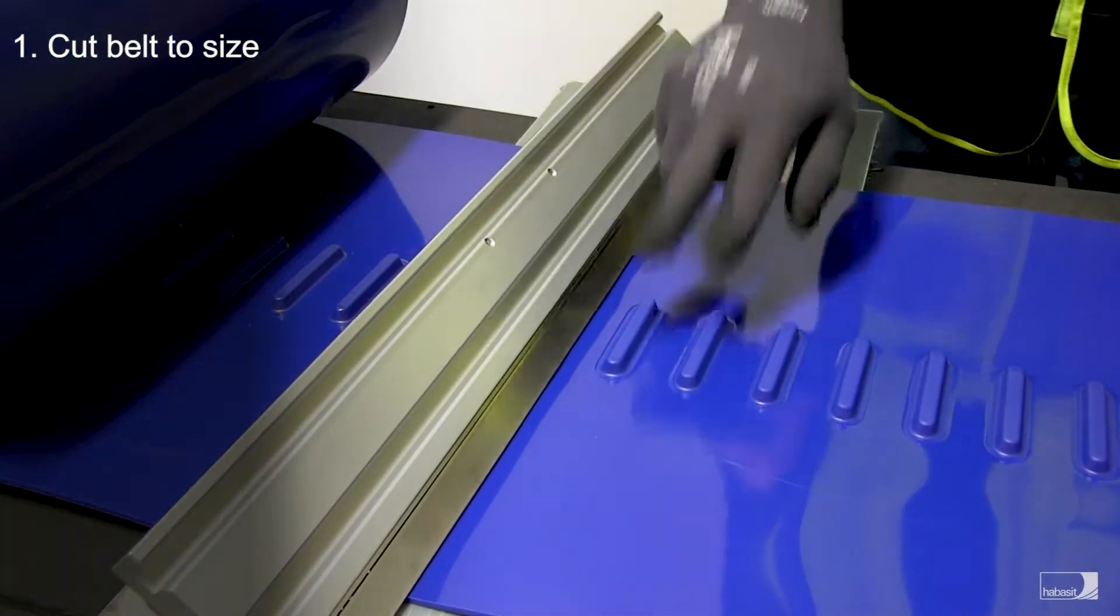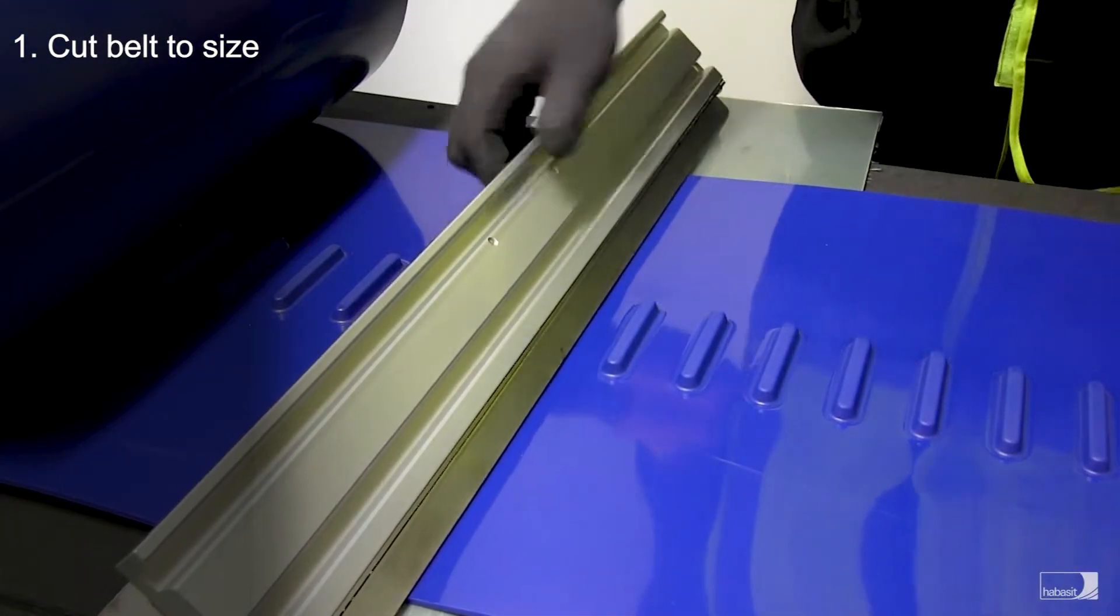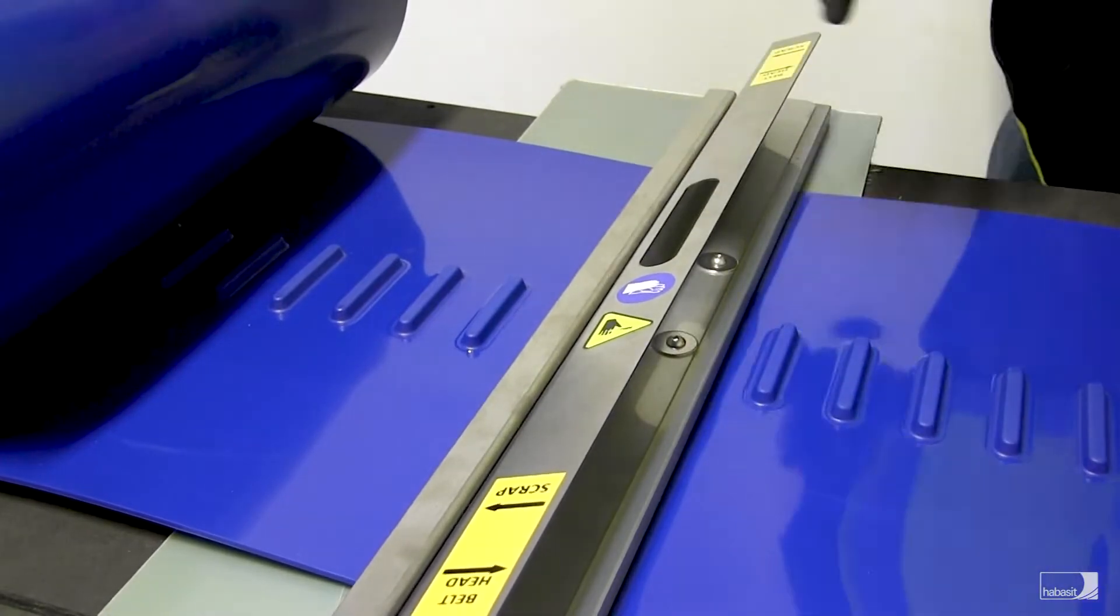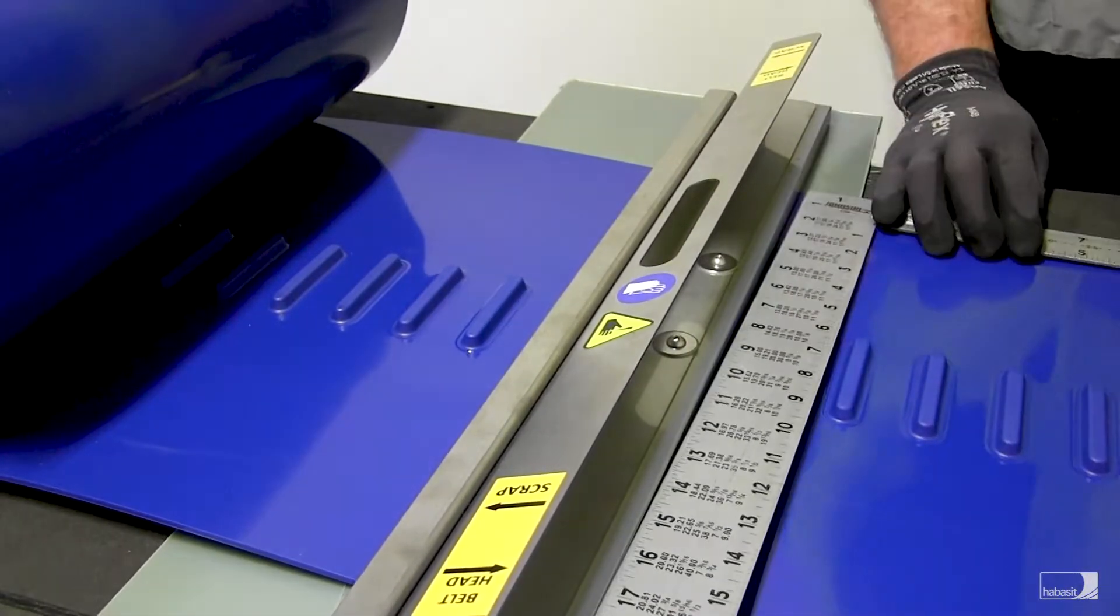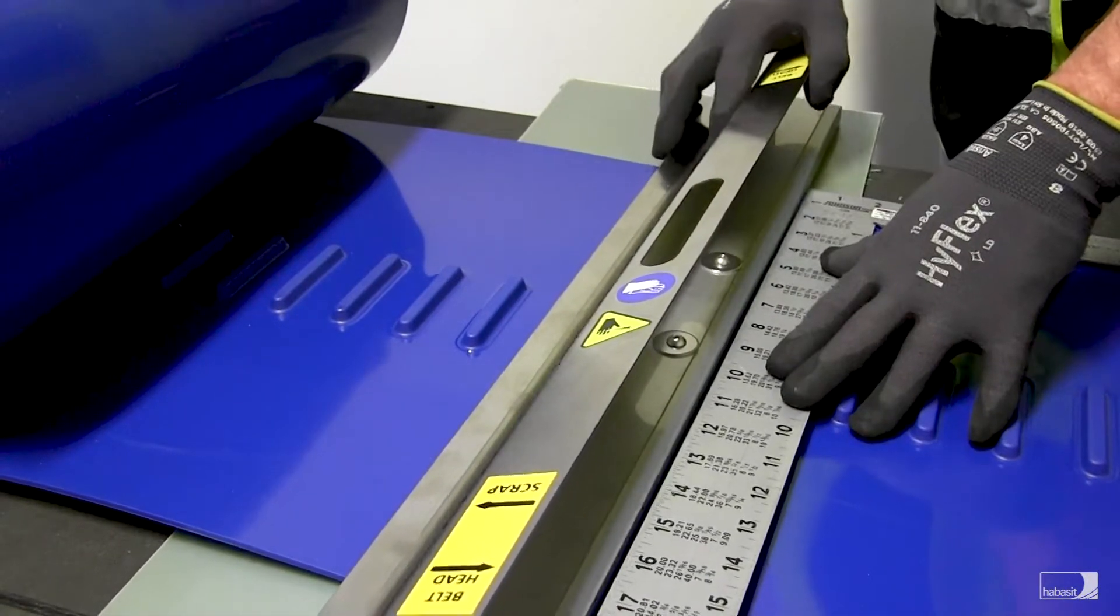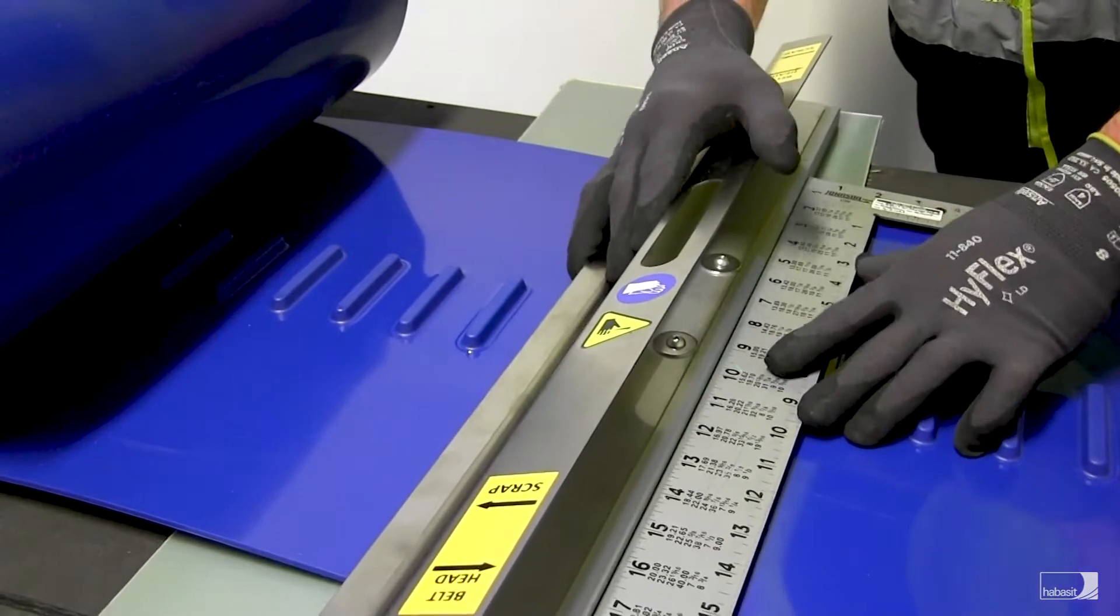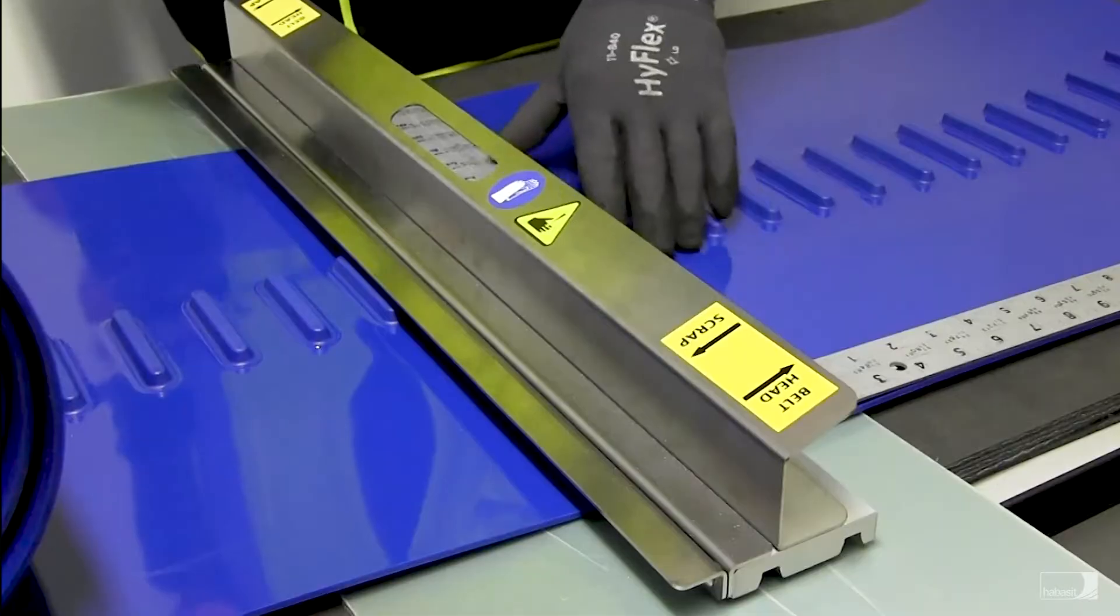First step is to cut the belt to size using our specially designed cutting tool for safety, accuracy, and repeatability. In this step, ensure the fixture is snugly aligned with the lugs and the cutting device is squared with the 90-degree framing square which shall be aligned with the belt edge.